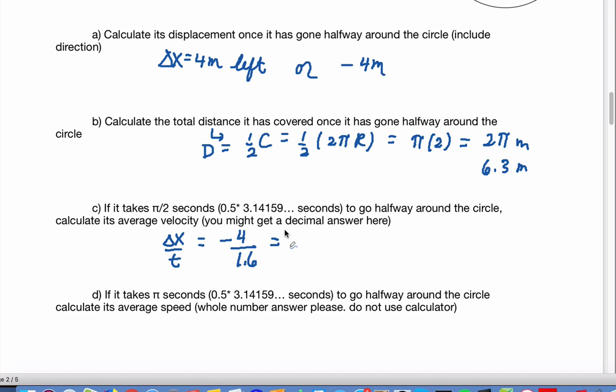And that's going to give us about 2.5. So it's about negative 2.5 meters per second.